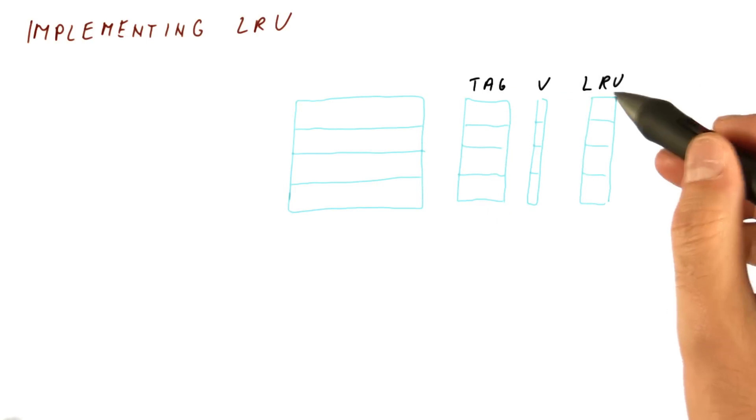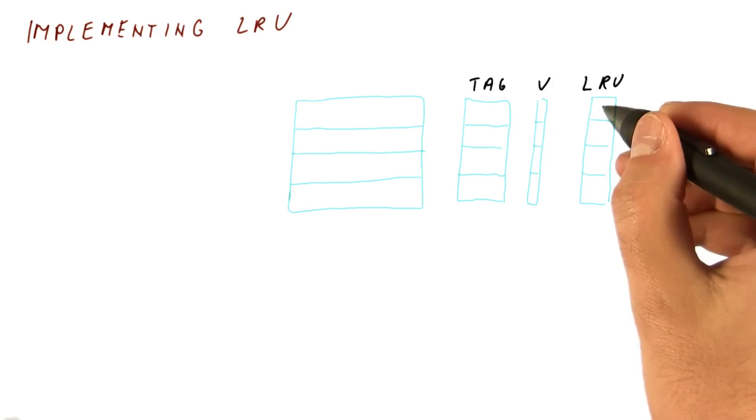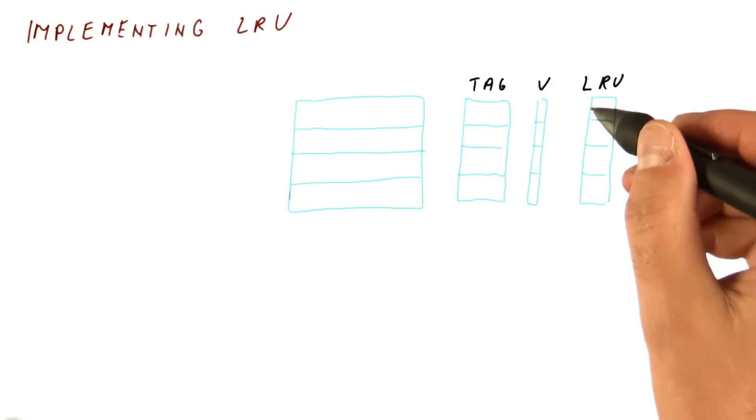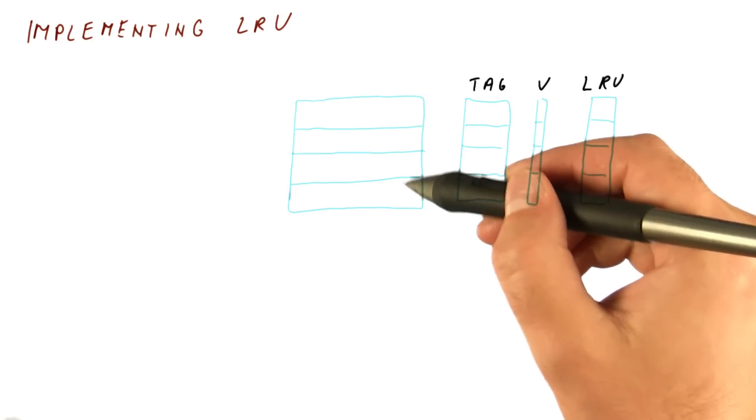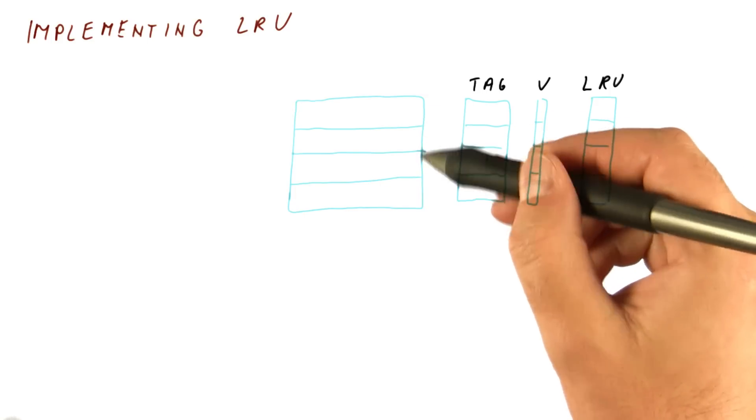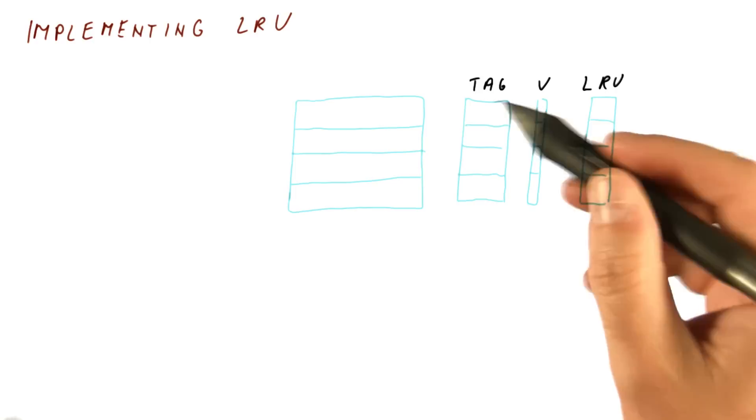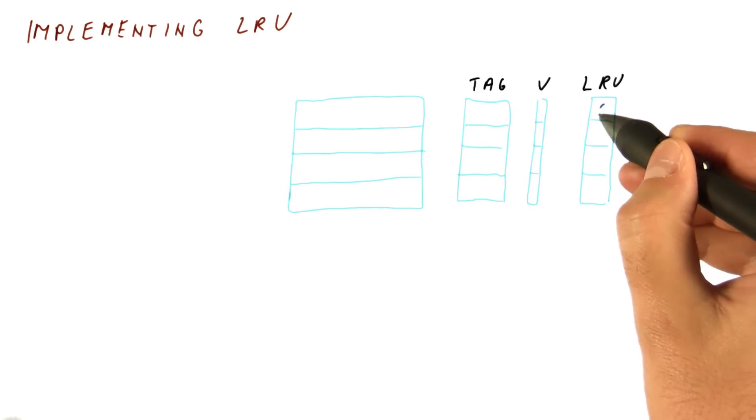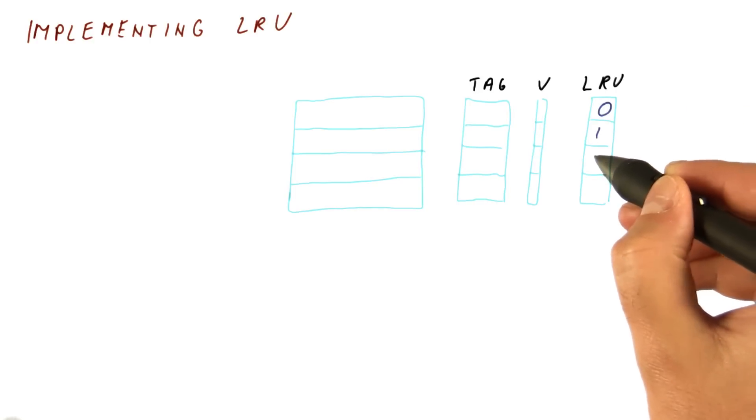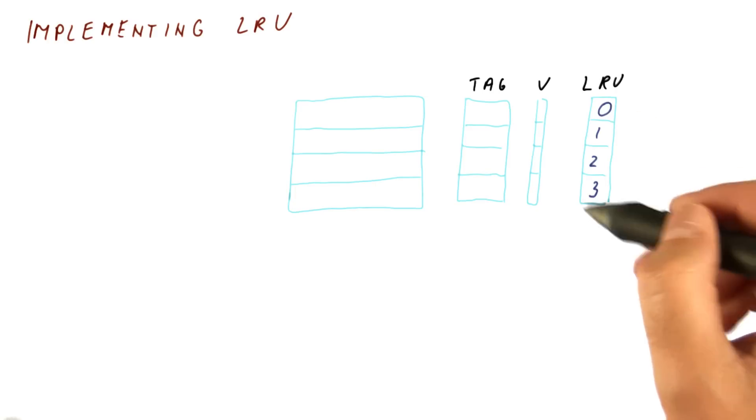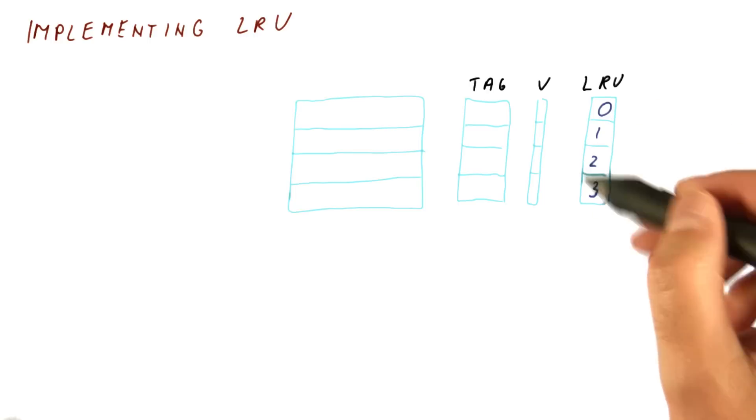In order to track which block was accessed when, we're going to also have an LRU counter for each block. These counters take values that correspond to the size of the set. In this case, 0 through 3 because there are four things in the set. So let's initialize them to 0, 1, 2, and 3. They have to all be different all the time, and we will see how that is maintained.